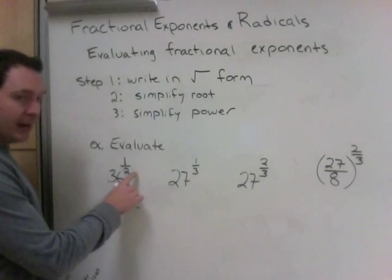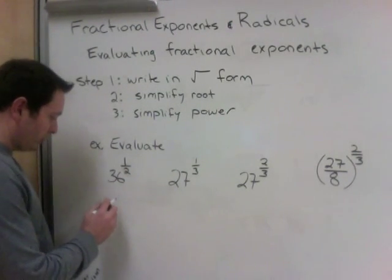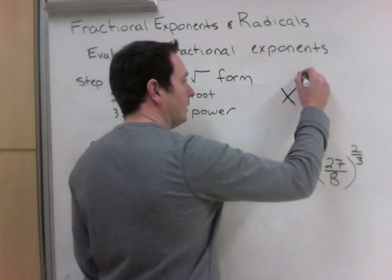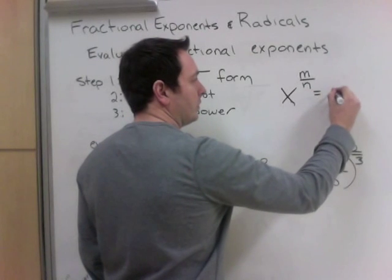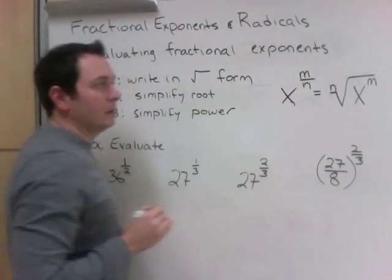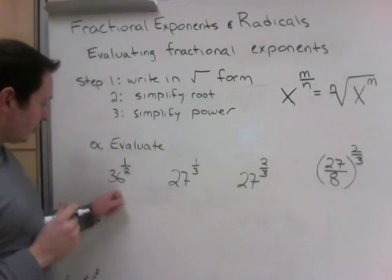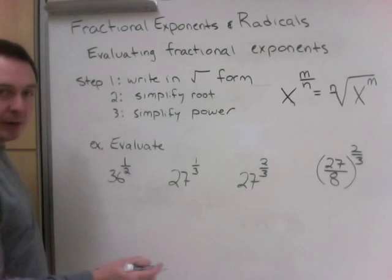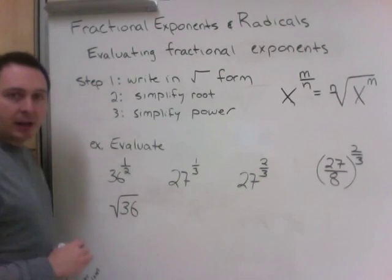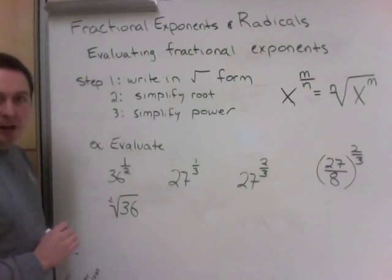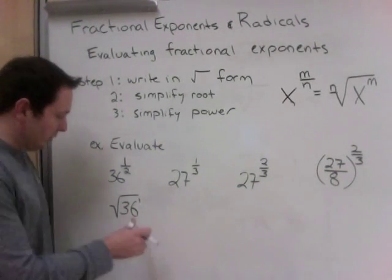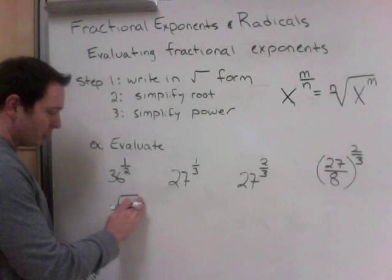To evaluate 36 to the power of 1 half: using boots and hats, this becomes the square root of 36 to the power of 1. The 2 in the denominator gives a square root — we don't need to show that 2. The power of 1 we also don't show. So we just need the square root of 36, which is 6.